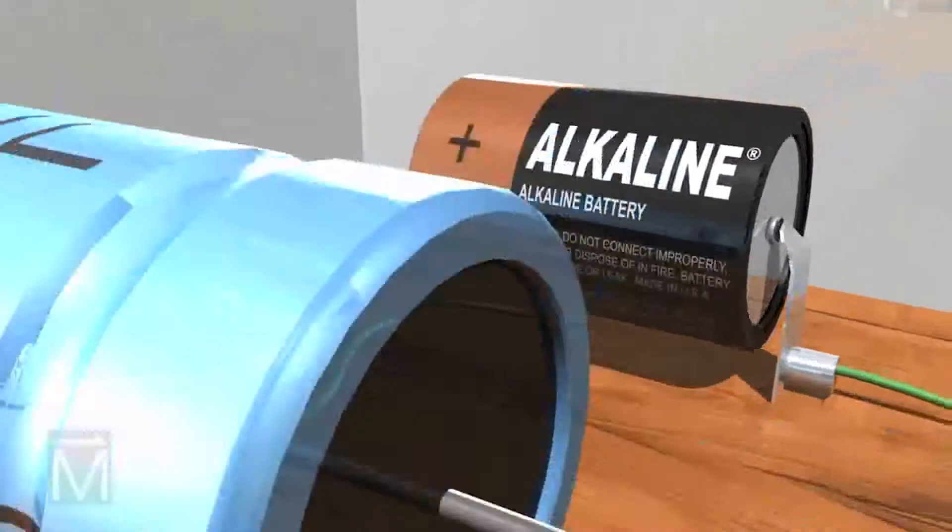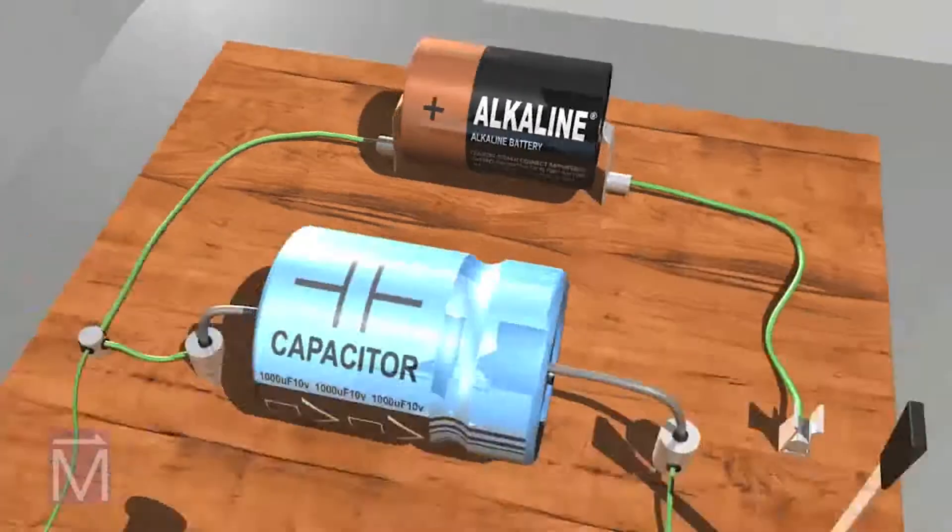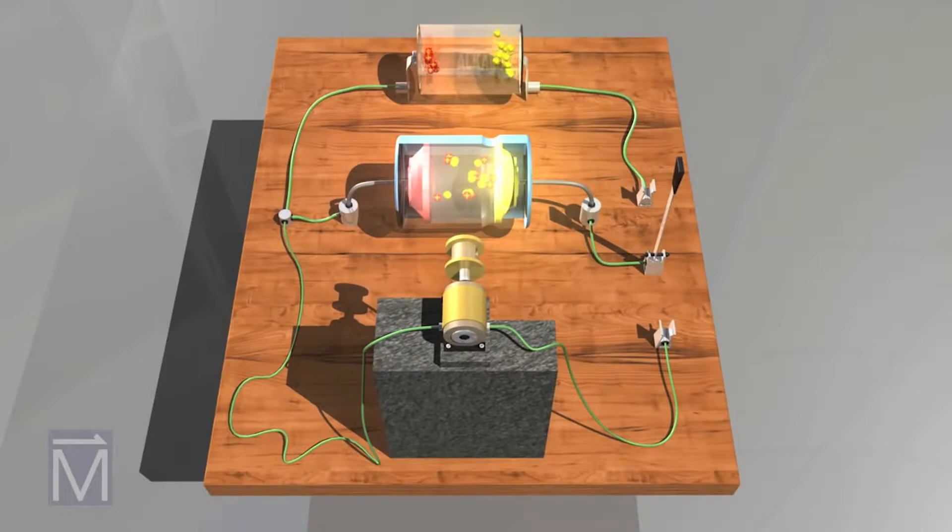A capacitor is similar to a battery in that both store electrical energy, but a capacitor is a much simpler device that can't produce new electrons. It only stores them.